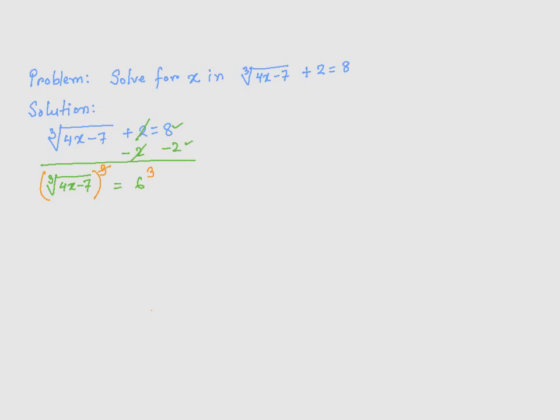Now third power and cube root are going to cancel out, that's going to give me 4x minus 7 is equal to 6 cubed, which is going to be 216.